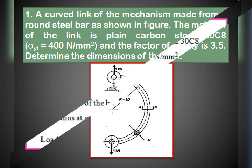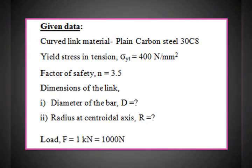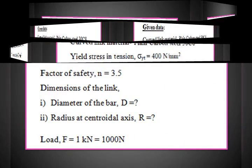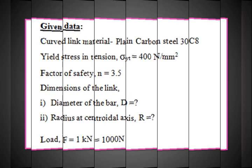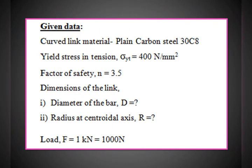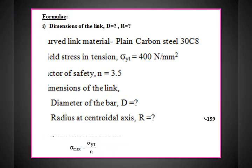Now we will list out the data from this problem. Curved link material: plain carbon steel 30C8. Yield stress in tension sigma_yt = 400 N/mm². Factor of safety n = 3.5. We need to find the dimensions: diameter of the bar D and radius at the centroidal axis R. From the figure, the load applied is 1 kilo Newton in tension.